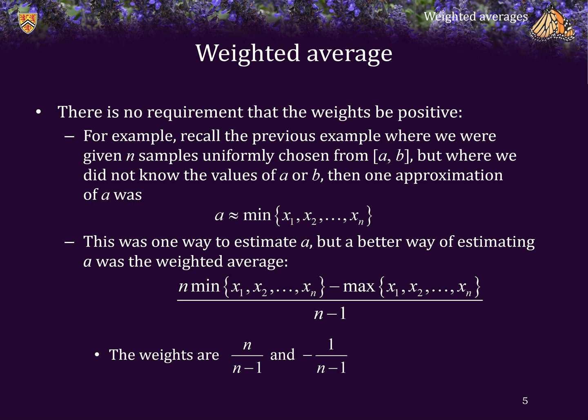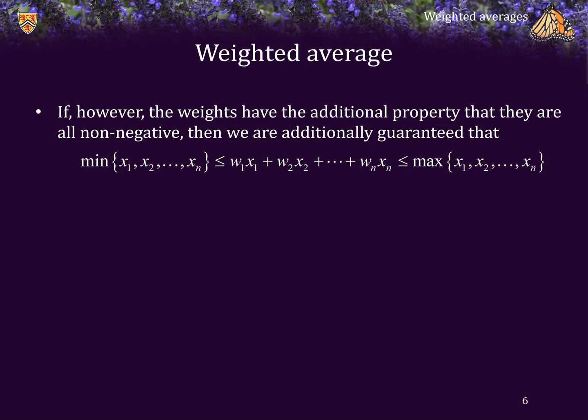In this case, the weights are n over n minus 1 and negative 1 over n minus 1. The sum of these two values is always equal to 1. If we have the additional constraint that all the weights are non-negative, then we also have one additional guarantee: the weighted average must be between the minimum and maximum values of the items we are taking a weighted average of.